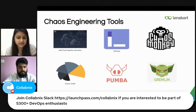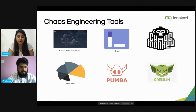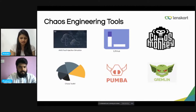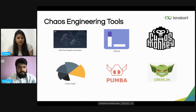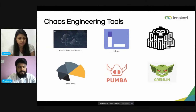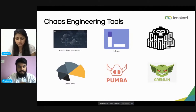Now, what are the different tools we can use? I've covered a few tools here, but there are many tools in the market. The first is AWS Fault Injection Simulator — a fully managed service for running fault injection experiments on AWS, after which one can improve application performance, observability, and resiliency. Next is Chaos Toolkit — a free and open source toolkit that provides an API to all various chaos experiments.